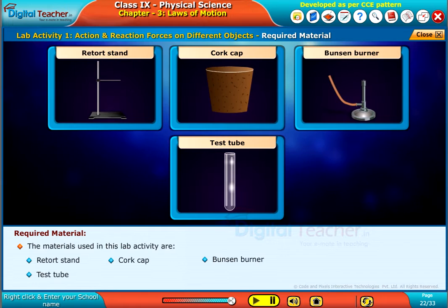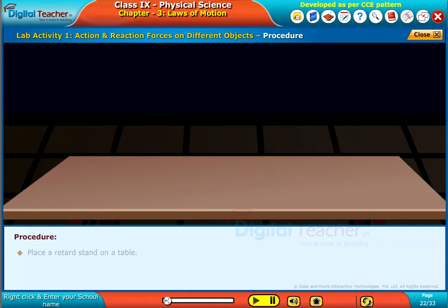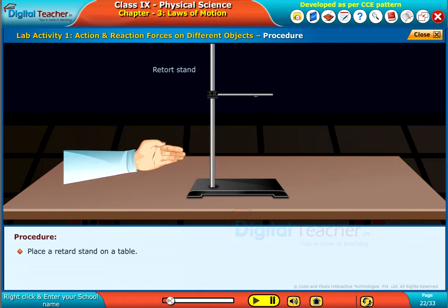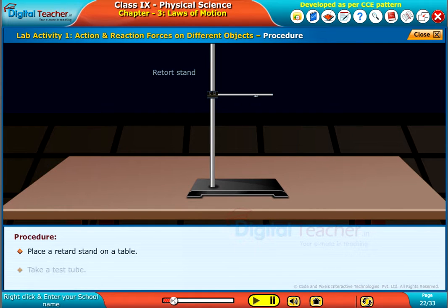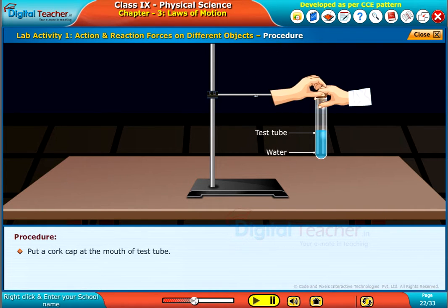Place a retort stand on a table. Take a test tube, pour a small amount of water in it. Put a cork cap at the mouth of the test tube.